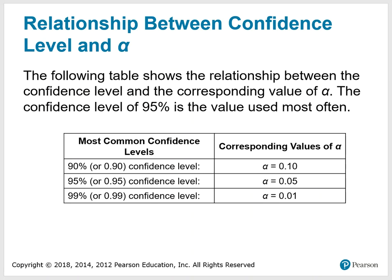Here's a chart showing the relationship between the confidence level and alpha. The confidence level of 95% is the value used most often. If we have a 90% confidence level, decimal representation 0.90, then the corresponding alpha would be 0.10, because 0.10 plus 0.90 equals 1. The other values of alpha are found in a similar fashion.